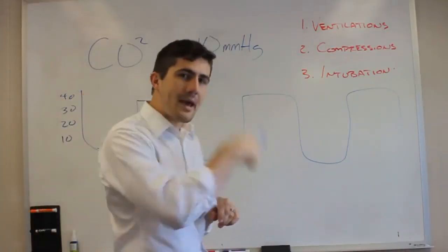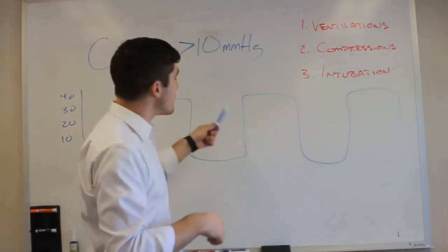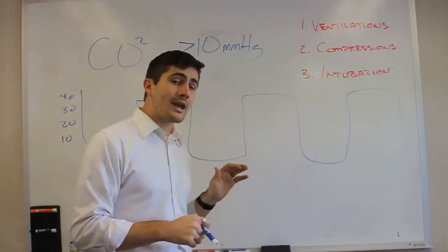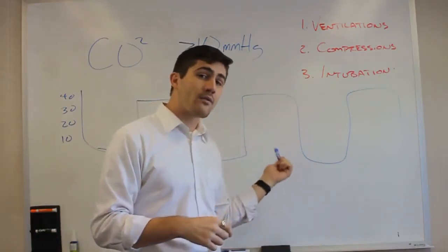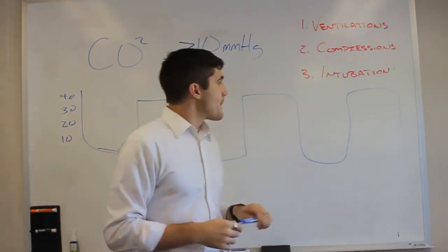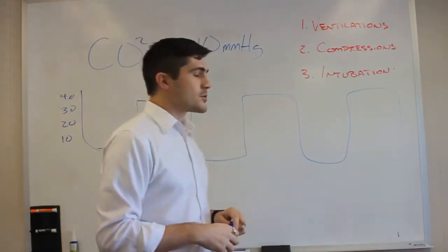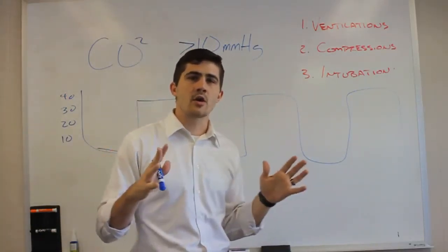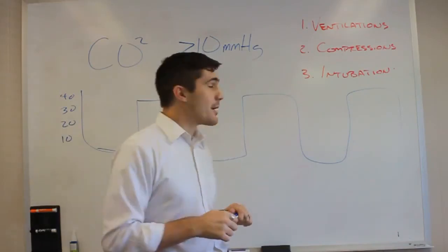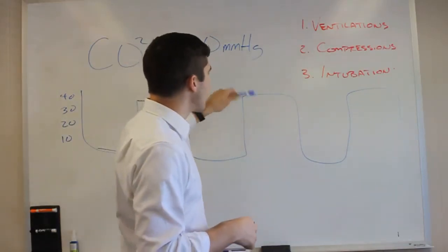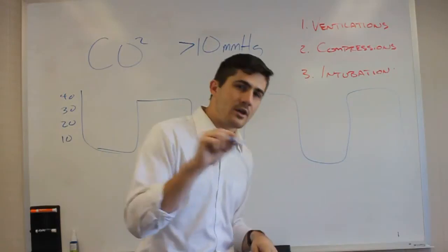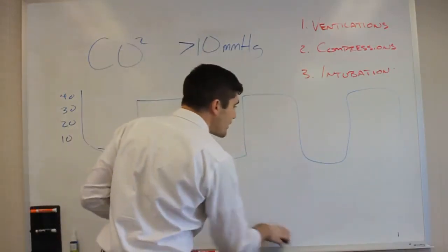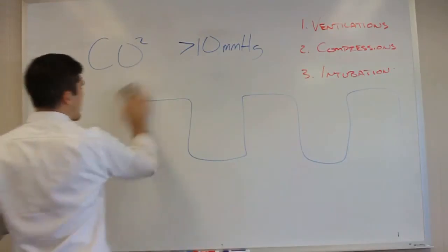If you get an intubation into the esophagus, you're not going to see any kind of waveform. It's only when you get it into the trachea that a waveform is going to show up. Now, what it doesn't tell you is whether or not you got a right main stem intubation or some other issue like that. But if you see waveform, you at least know that you've gotten into the trachea. So those are the three things that waveform is good for in a cardiac arrest.